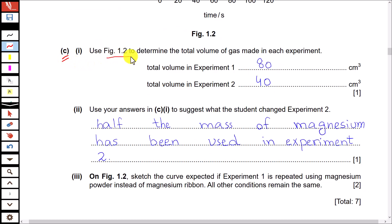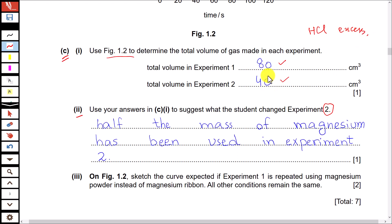Part C: use the figure to determine the volume of gas — we have already determined this. Then use your answer in C1 to suggest what the student changed in experiment 2. We know HCl is in excess, so if the volume of gas produced in experiment 2 is reduced to half, that is due to the mass of magnesium. Basically, the change is that half the mass of magnesium has been used in experiment 2, because the volume has been reduced to half.